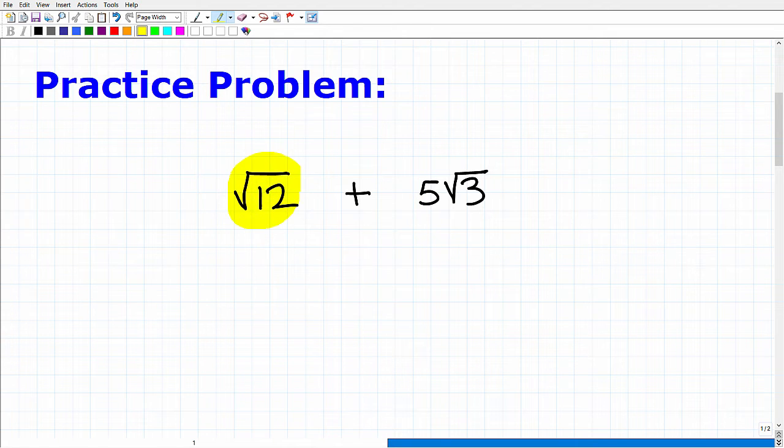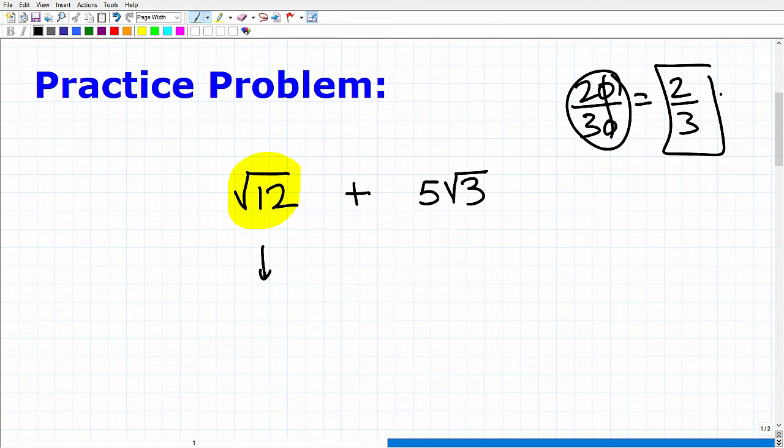Again, a basic fundamental type problem, and here it is. We have the square root of 12 plus 5 square root of 3. I'd like you to simplify this if possible. It may not be able to be simplified, but if you're able to simplify it, simplify it and write it using the square root or what we call radical notation. Definitely encourage you to pause the video. Don't go on Google and search out how to do this problem. Just think about it for a second, and obviously I'm going to solve it here. So let's start with the square root of 12. The thing here is this: can I write the square root of 12 differently? Can I write it in a simpler form?